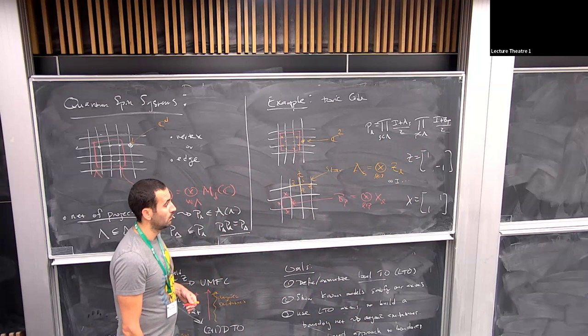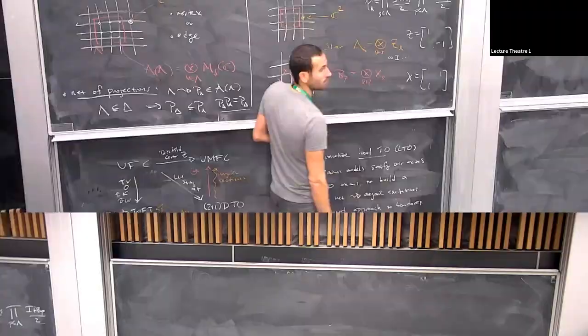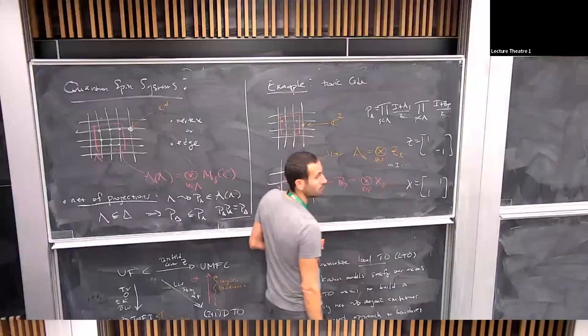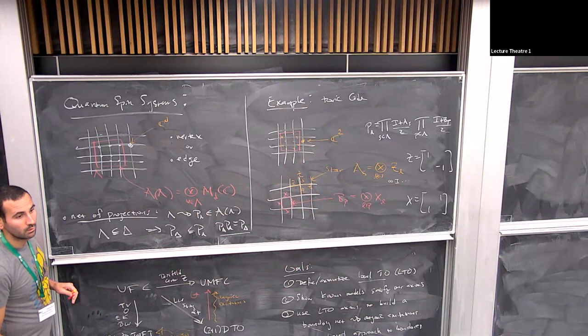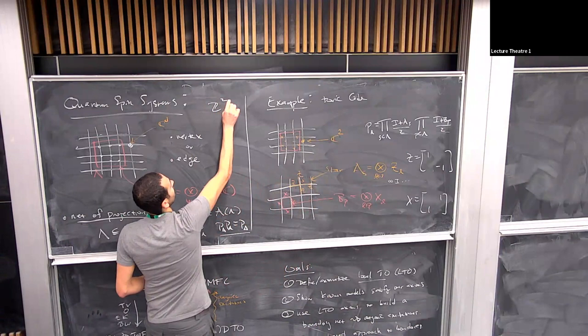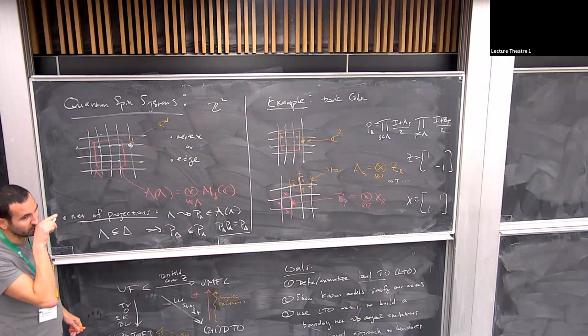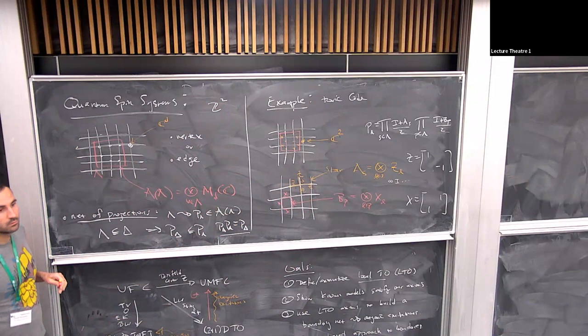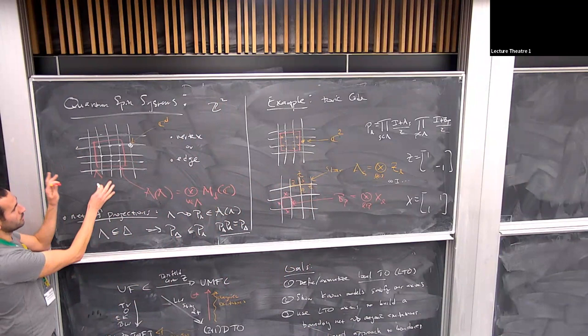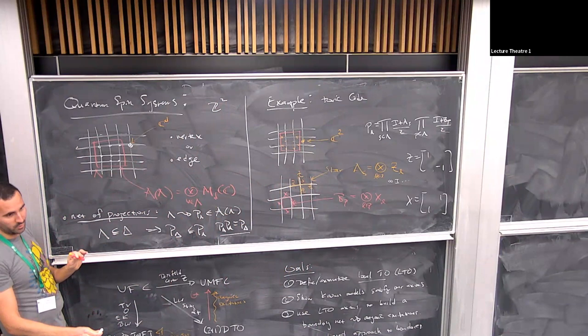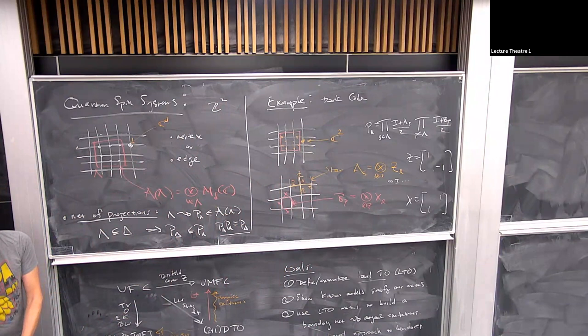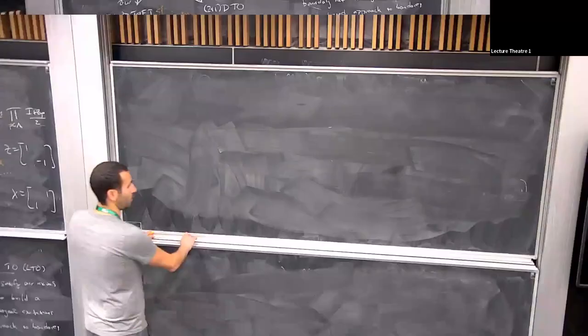Frustration-free means the ground state is also a ground state of all local terms in the Hamiltonian. We work on a Z² lattice, taking either the vertices or edges, just in the plane. Now I can tell you what the local topological order axioms are — the LTO axioms.